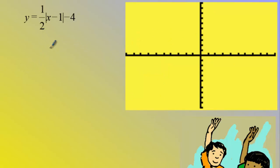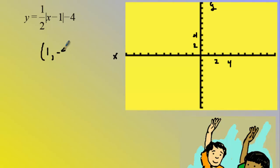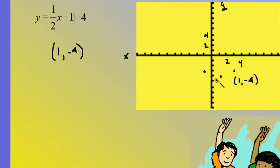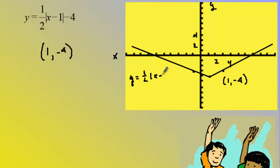Here I have one-half times the absolute value of x minus one minus four. I'll mark my axis and scale it. This is a shift to the right one and down four, so my vertex is at one, negative four. There's no negative sign so it faces up. The slope is one-half so it's a rise of one and a run of two each way — that shrinks it out or makes the absolute value much wider. I'll label the graph.